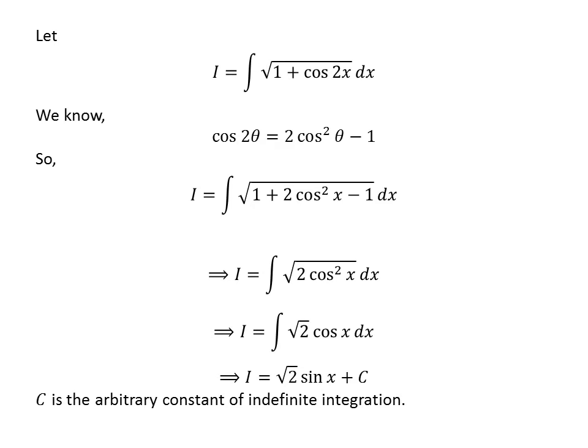Square root of 2 is a constant and the antiderivative of cosine x is sine x, so I is equal to square root of 2 times sine x plus capital C. Capital C is the arbitrary constant of indefinite integration. Never forget to add this constant.